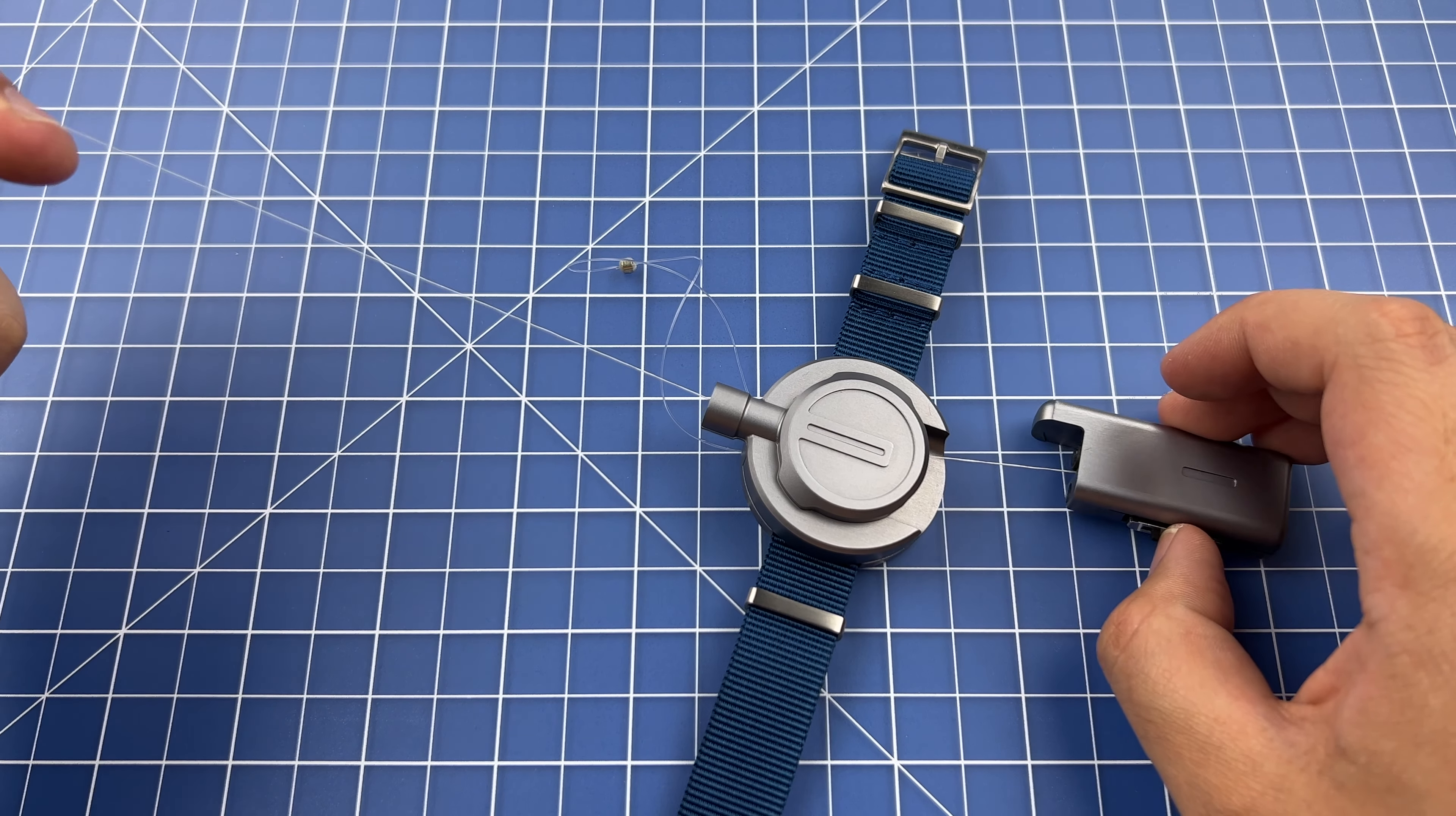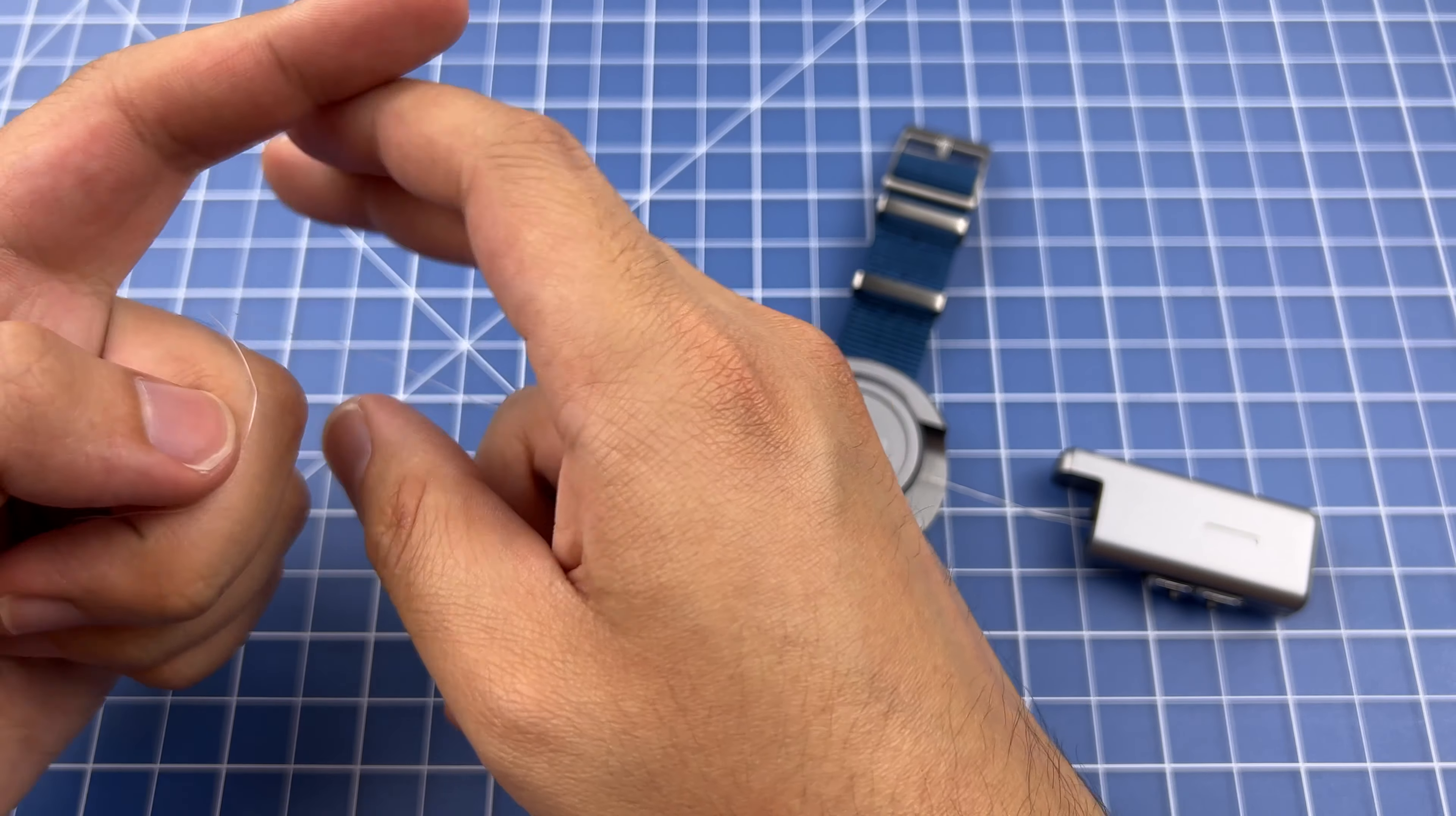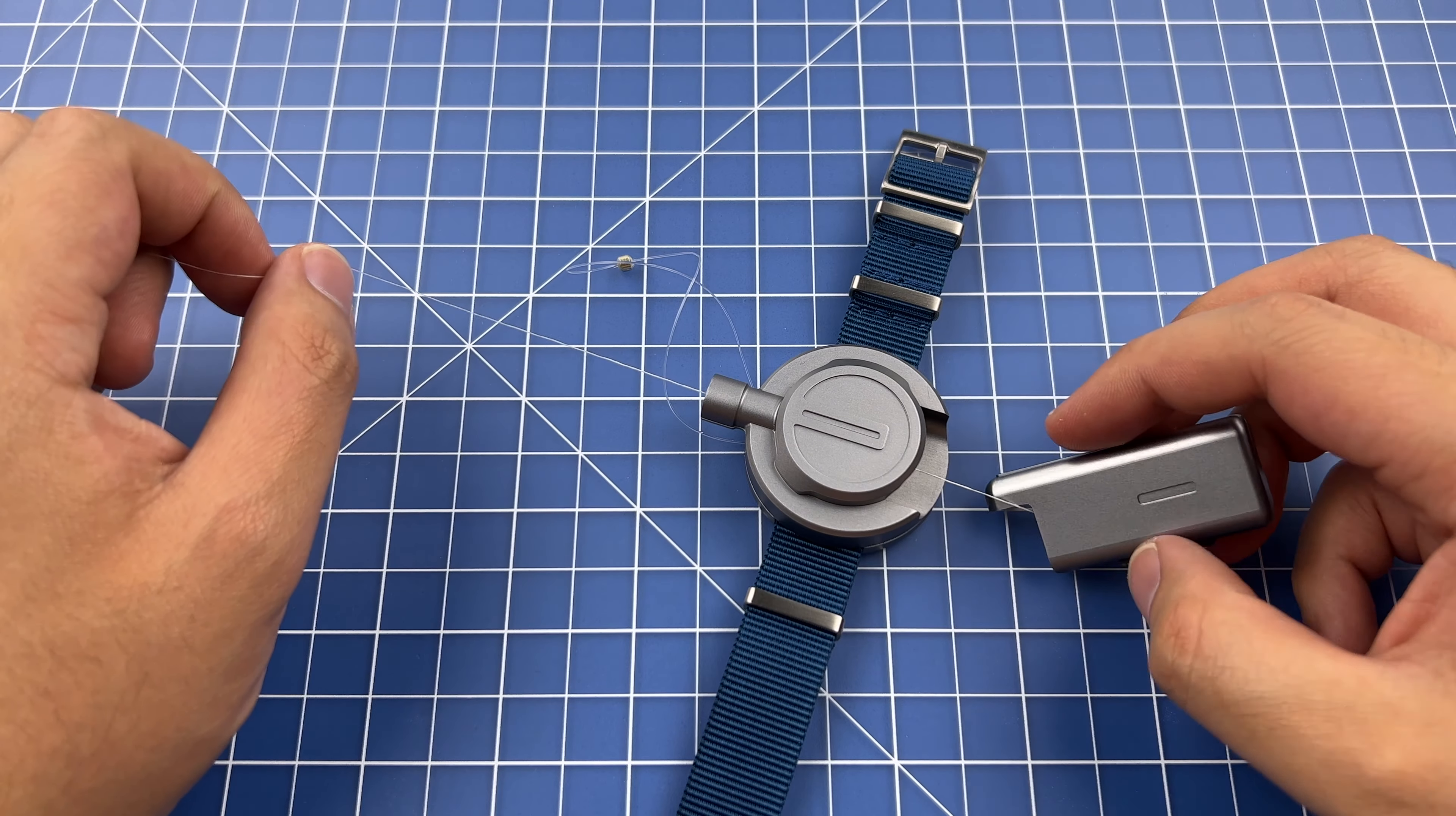Always make sure that it shoots in a straight line, and that when reloading, the line does not touch itself or loop upon itself. When it does this, it can cause jams and tangles, so make sure to avoid this.